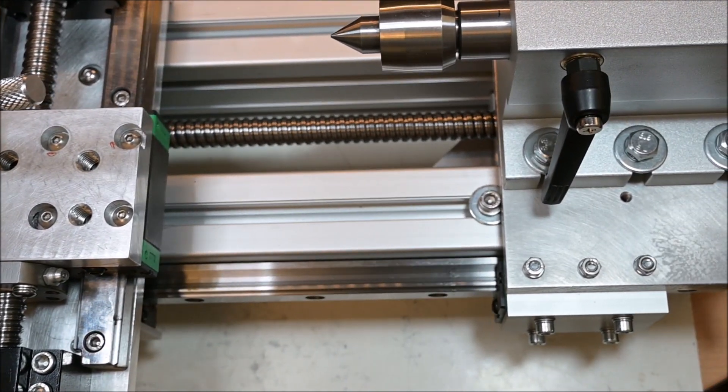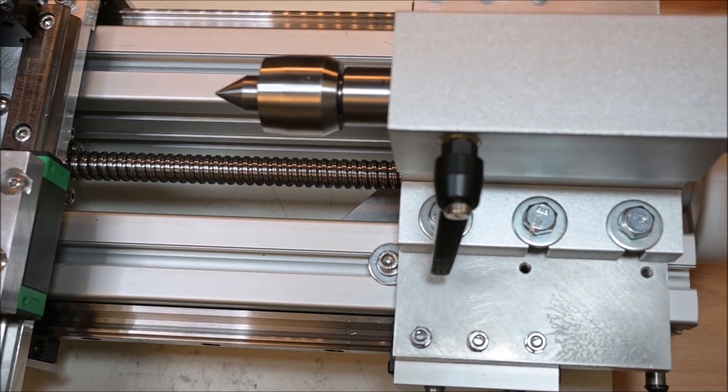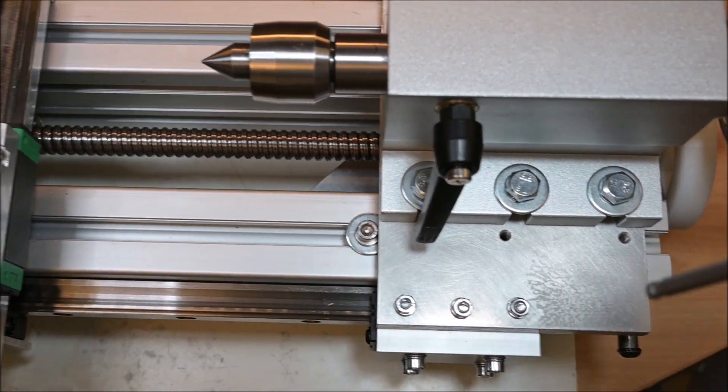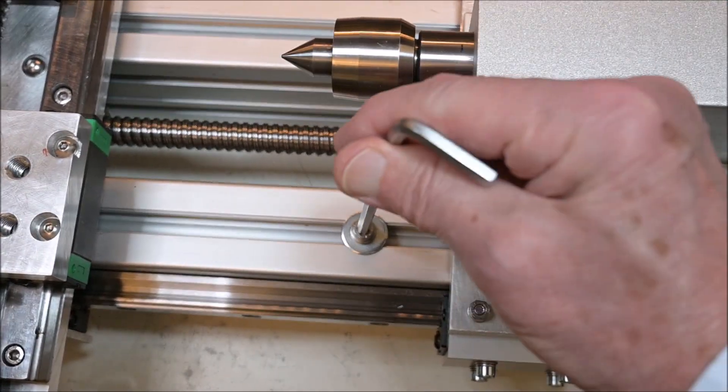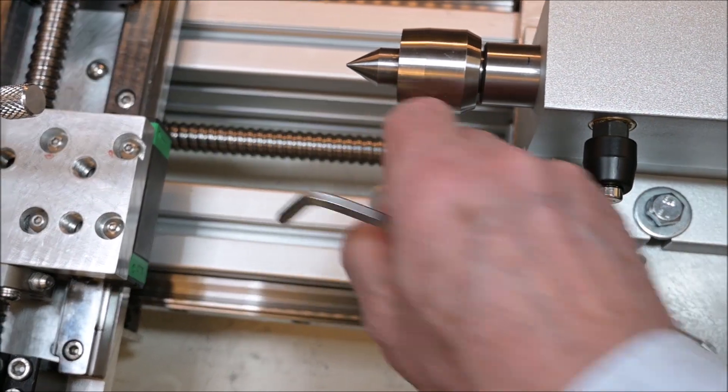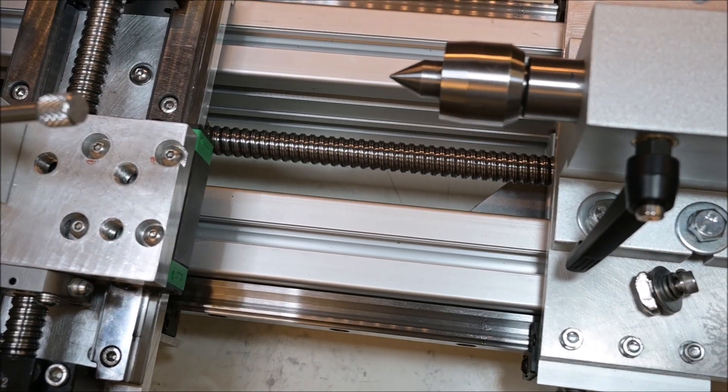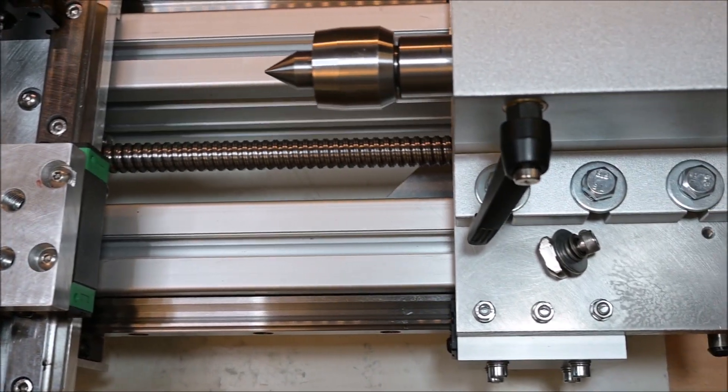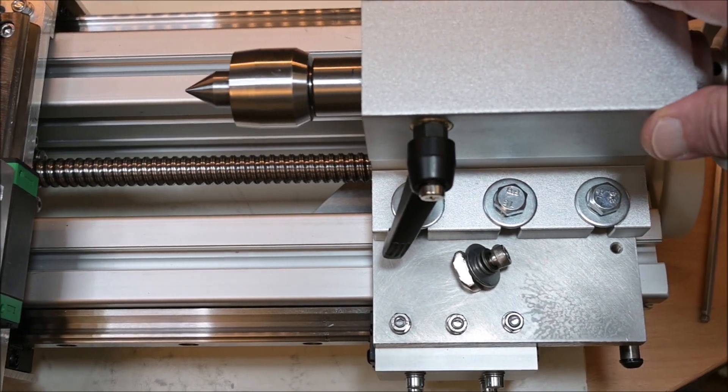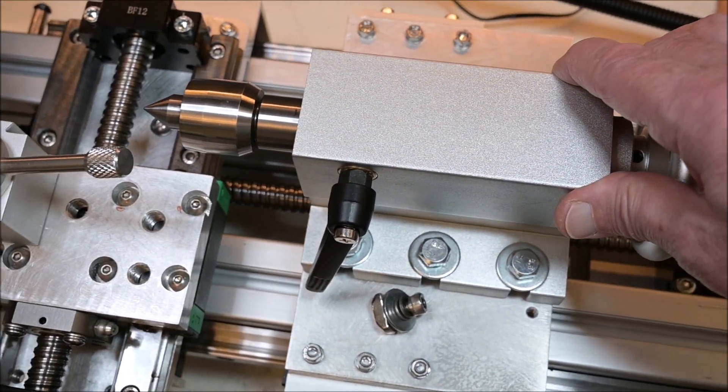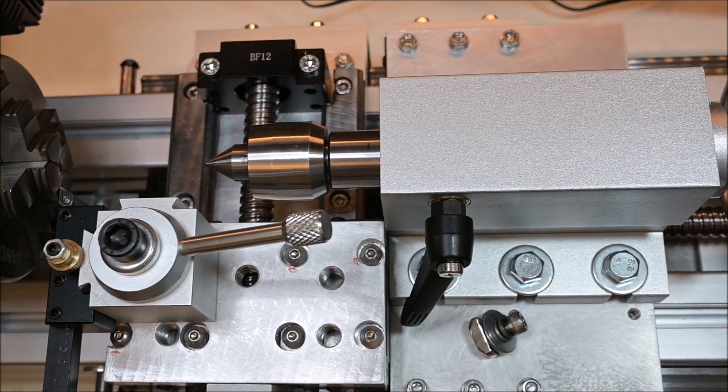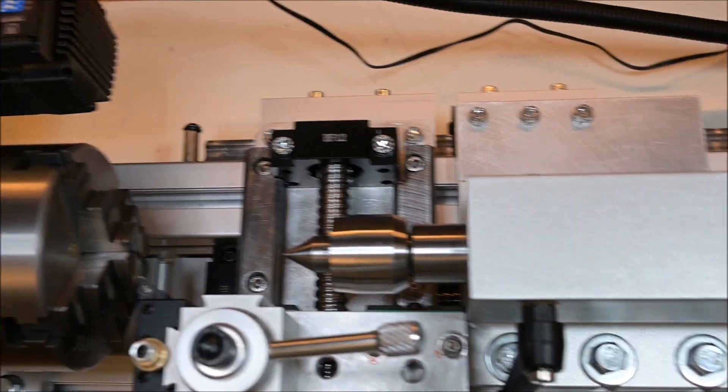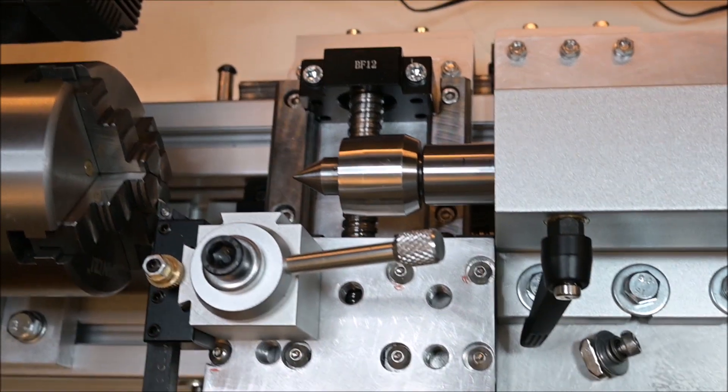The tailstock is attached to the linear rails so I can actually move it back and forth if I want to. Of course it can also be locked in position, but currently I don't have any other solution to this than using simple T nuts in both ends of the tailstock.